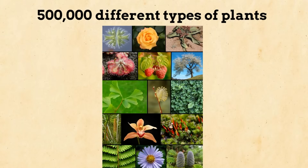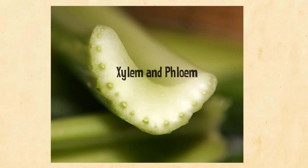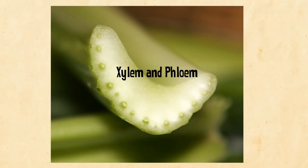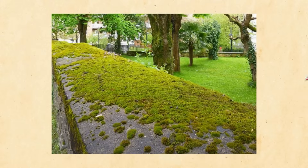There are roughly 500,000 species of plants on Earth. Two major categories are vascular and non-vascular plants. Vascular plants have vascular tissue, which allows them to grow larger in size. There are two types of vascular tissue: xylem, which transports water throughout the plant, and phloem, which transports sugar throughout the plant. Think of vascular tissue as our veins and arteries. Non-vascular plants move water and sugar around by osmosis, which limits their size. A common example would be moss.